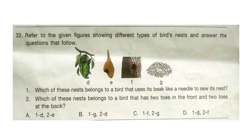Question 32: Refer to the given figures showing different types of birds' nests and answer the questions. Question 1: Which of these nests belong to a bird that uses its beak like a needle to sew its nest? Question 2: Which of these nests belong to a bird that has two toes in the front and two toes at the back? Answer: 1 is D — the Tailor bird uses its beak like a needle to sew its nest and its nest looks like picture D. Answer 2 is F — two toes in front and two at back, examples are owls, parrots and hornbills which build nests mostly in hollow spaces of trees or walls. So the correct answer is 1D, 2F — option D.